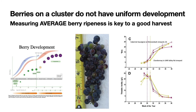Because of this non-uniformity, we need to measure the average berry ripeness in our vineyard. To do that, one must collect a number of berries — whether single berries or whole clusters — and crush them together to get an average value. I prefer the whole cluster approach.